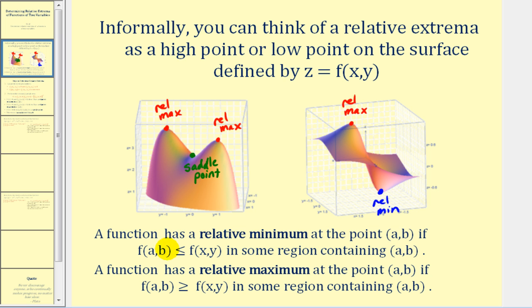More formally, a function has a relative minimum at the point a, b if f of a, b is less than or equal to f of x, y in some defined region containing a, b. And the function has a relative maximum at the point a, b if f of a, b is greater than or equal to f of x, y in some region containing a, b.